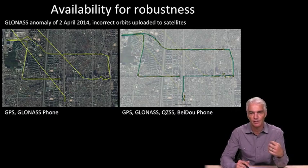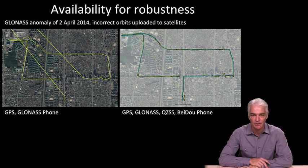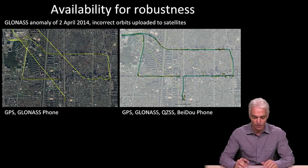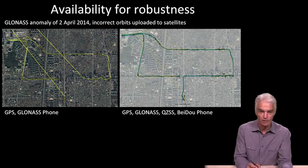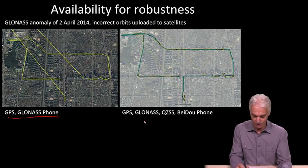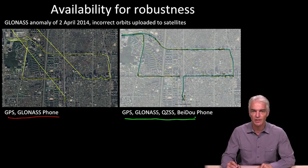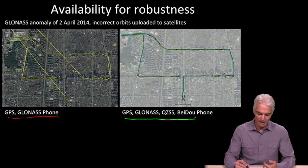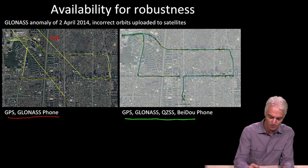There's also availability of satellites for robustness. And something very interesting happened on the 2nd of April this year where by an error in the system, the incorrect orbits got loaded up to GLONASS satellites. And at that time there were some tests being done side by side with a phone that had GPS GLONASS receiver in it, and it was simultaneously being tested against a phone available in 2014 that had GPS GLONASS, QZSS, and Beidou. And without any warning, these GLONASS satellites started transmitting the wrong orbits. The phone that was using just GPS and GLONASS had a position jump of 10 kilometers.